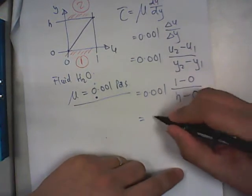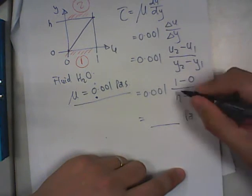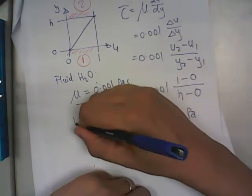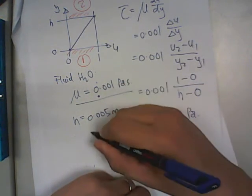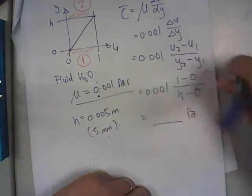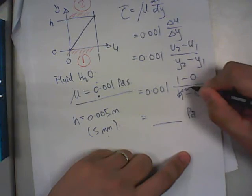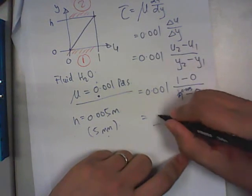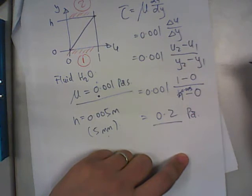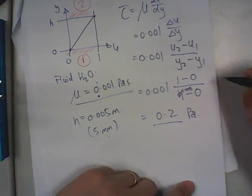And then you will get your value in terms of pascals. Let's say for example h is 0.005 meters, which is actually 5 mm. What we will get is 0.005. You will get 0.2 pascals. So this is your shear stress.